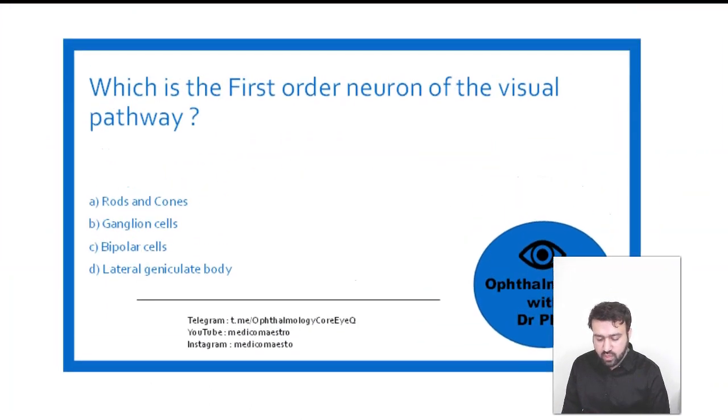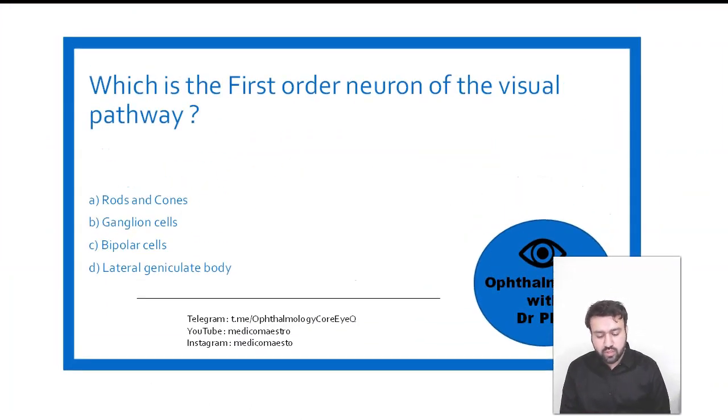And then the second question, which is the first order neuron. So again, this one is going to be bipolar cell is first order neuron. Ganglion cell is second order neuron. And the lateral geniculate body is going to be the third order neuron. That's it.